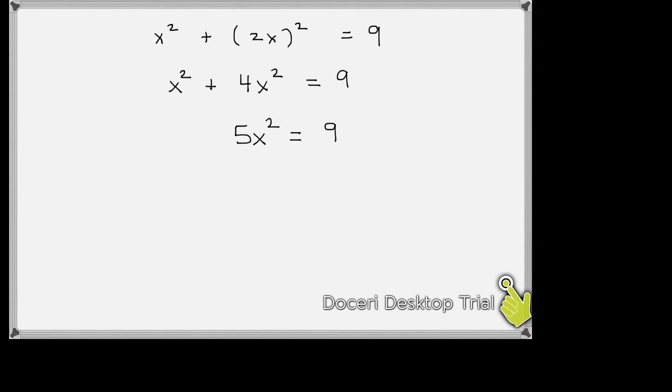So what you want to do when you have that situation is just to isolate the x squared by itself on one side. And to do that, all we would have to do is divide both sides by 5. That gives us x² = 9/5.